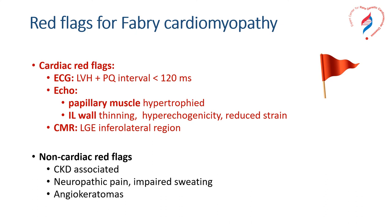To summarize, the red flags for Fabry cardiomyopathy can be cardiac and extracardiac. On cardiac tests, the ECG can show a combination of LV hypertrophy and short PR interval. Echocardiography will describe not only LV hypertrophy but also papillary muscle prominence, infralateral wall thinning with hyperechogenicity, and reduced strain. Cardiac MRI will find late gadolinium enhancement in the infralateral region. Non-cardiac red flags include association of chronic kidney disease — even mild forms or just proteinuria — neuropathic pain, impaired sweating, and the presence of angiokeratomas.